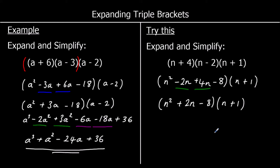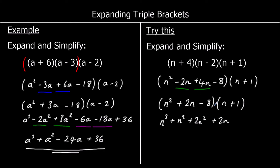So now we're going to expand and simplify again — n squared times both terms in the second bracket, 2n times both terms in the second bracket, and negative 8 times both terms in the second bracket. n squared times n is n cubed. n squared times 1 is n squared. 2n times n is 2n squared. 2n times 1 is 2n. Negative 8 times n is negative 8n. And negative 8 times positive 1 is negative 8.